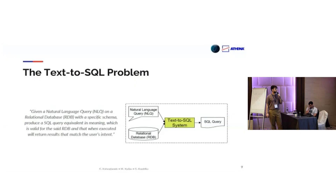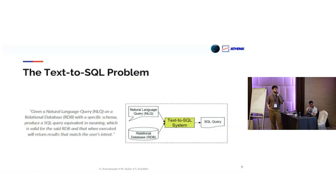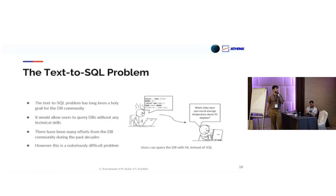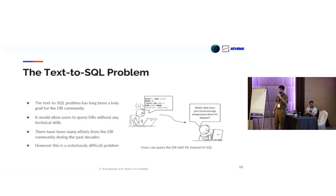The text-to-SQL problem says that when we are given a relational database and a natural language question posed on that database, we want to create an SQL query that has the same meaning as the natural language question, and that this SQL query must be valid to be executed on this database and should return the results that the user wanted. This has been studied for many decades by the database community, because it would open up access to databases using only natural language. However, this is a very difficult problem.